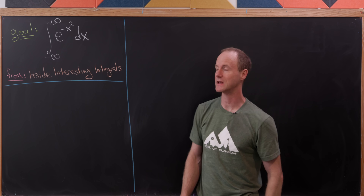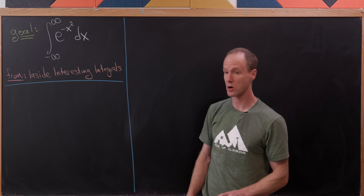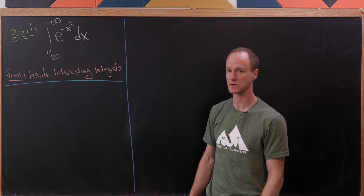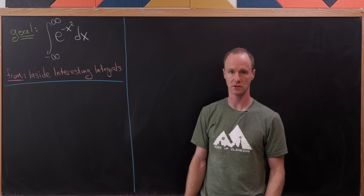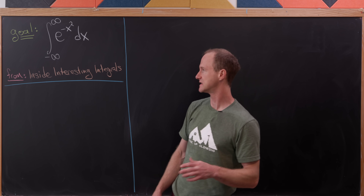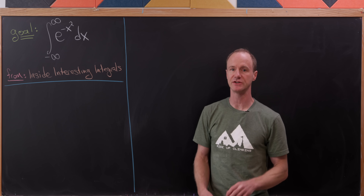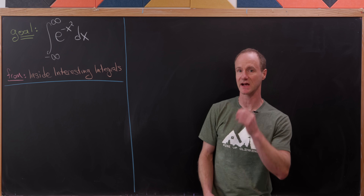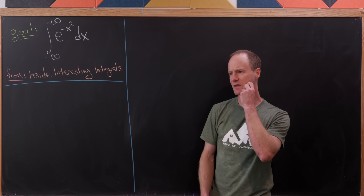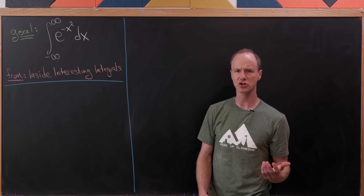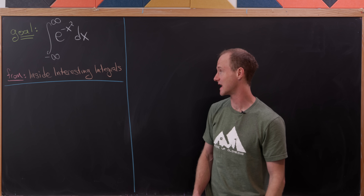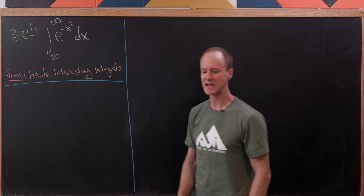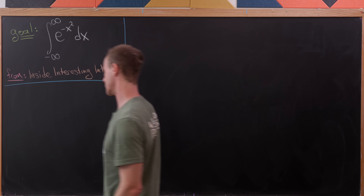Today we're going to look at a very nice approach to evaluating the very famous Gaussian integral — the integral from minus infinity to infinity of e to the minus x squared dx. This approach I found in the book Inside Interesting Integrals. So let's see how we're going to do this.